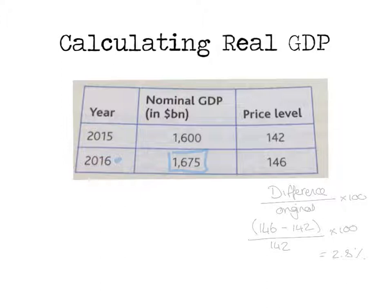Now if we consider the 2015 price level of 142 as our base rate and convert that into our base rate, and we know that there's been a 2.8 percent increase, we can now change that into a different index number — and we can change that into 102.8. So now we've got our price level of 102.8 in terms of our index number.